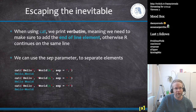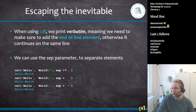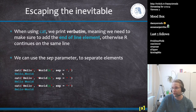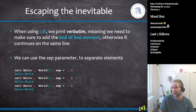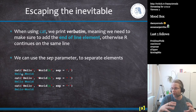When using `cat()`, output is printed verbatim, so you must add end-of-line characters manually. You can also use a `sep` parameter to separate elements — for example separating with a comma, a space, or a dash. This is very useful when defining row or column names: paste a word with numbers 1–10 using a separator.